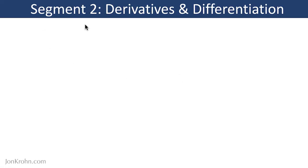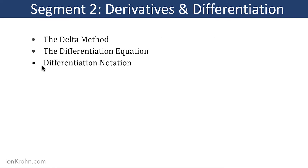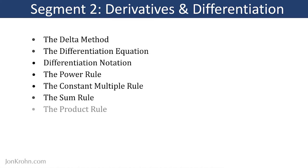In segment 2 on derivatives and differentiation, we covered the delta method. We covered the differentiation equation, which follows from our understanding of the delta method. We quickly looked at various ways of notating differentiation, and then we dug into differentiation rules, like the power rule, the constant multiple rule, the sum rule, the product rule, the quotient rule, and finally, the all-important chain rule.